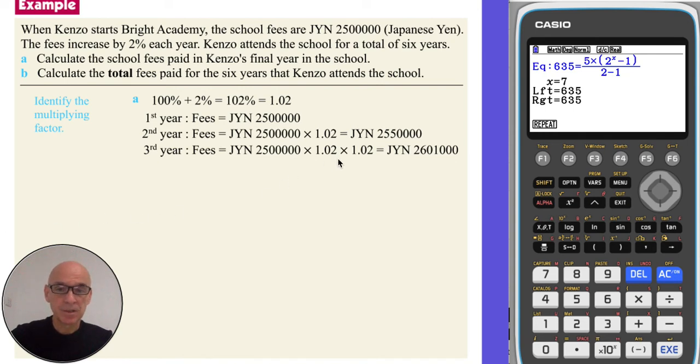And for the third year, multiplying that value by 1.02 gives an amount of 2,601,000 yen.